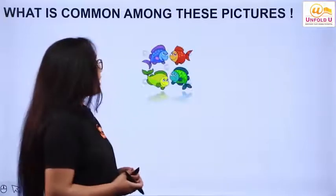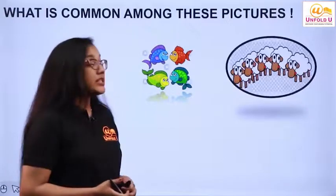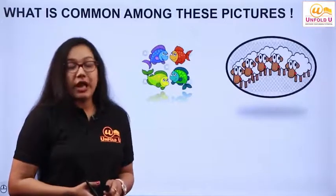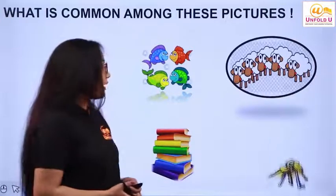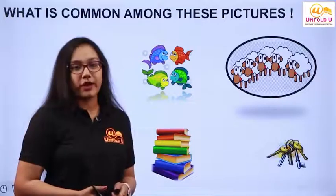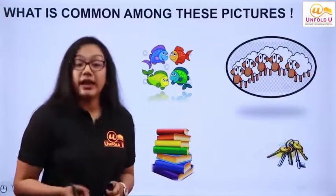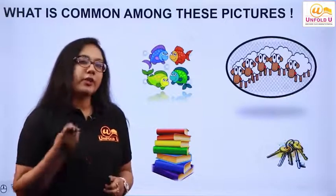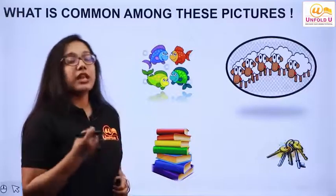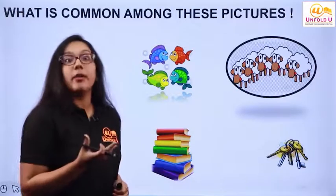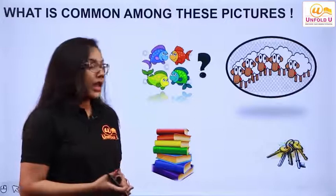The first one is the school of fishes, the second one is the flock of sheep, the third one is a pile of books, and the fourth one is the bunch of keys. Okay, so in saari pictures mein kya chiz hai jo common hai? Fata fata se yaad kijiye — in saari chizo ko dekh ke kya chiz common hai?